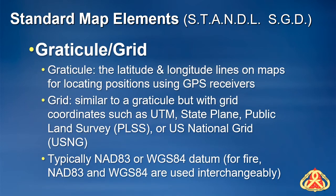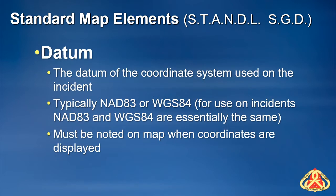The graticule or grid element is typically a graticule of latitude and longitude marks and numbers that allows referencing of the mapped area to the specific area on the earth. This element can also be in the form of other grid coordinates such as UTM, state plane, PLSS, or others. When working with aviation, it is typical to use a lat-long graticule in degrees, decimal minutes, WGS84 datum — this is the coordinate system and datum of their navigation systems. Even though standards for the datum to be displayed on GPS units should be included in the IAP, the most common place incident personnel look for guidance on the datum is in the maps produced on the incident. The datum must be noted on the map when a graticule or grid is used or if coordinates are displayed, as the correct datum is critical for GPS use.